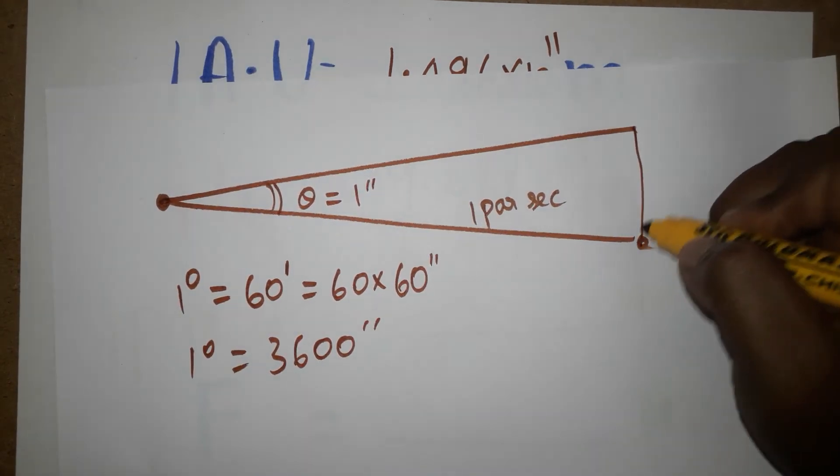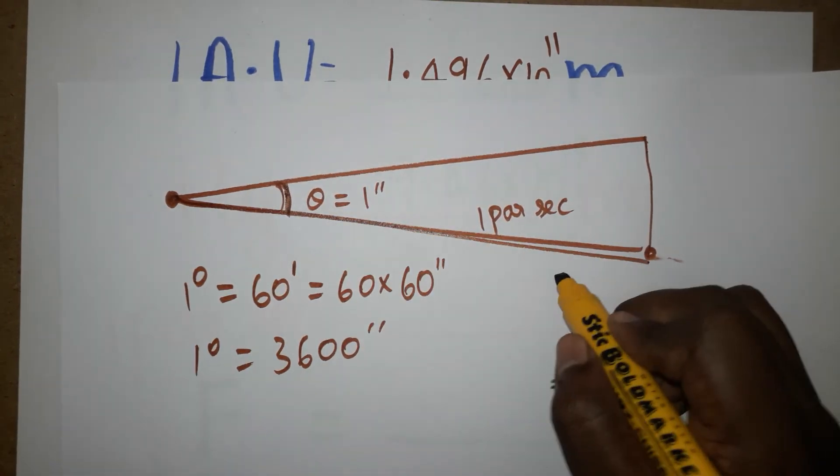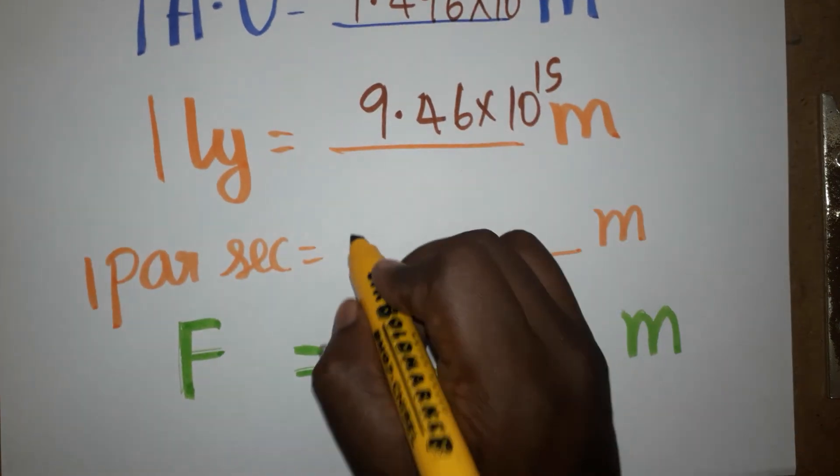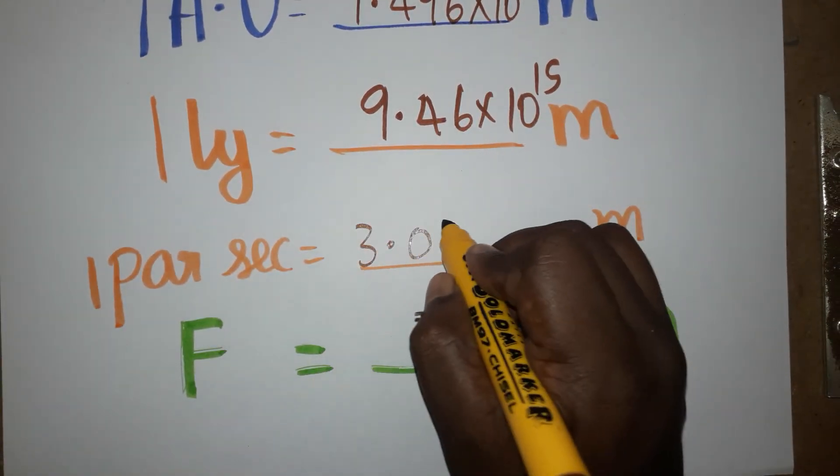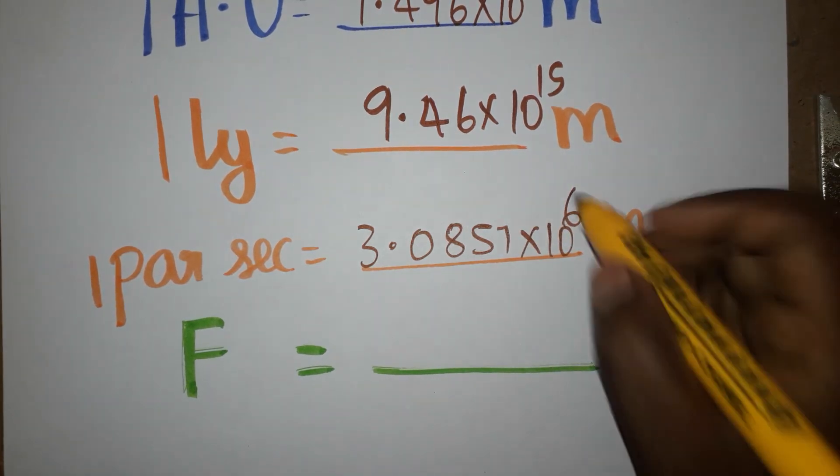It's a very very long distance. This is arc length and it is an angle. The distance between these two we are taking as parsec. This length is going to be 3.0857 into 10 power 16 meter.